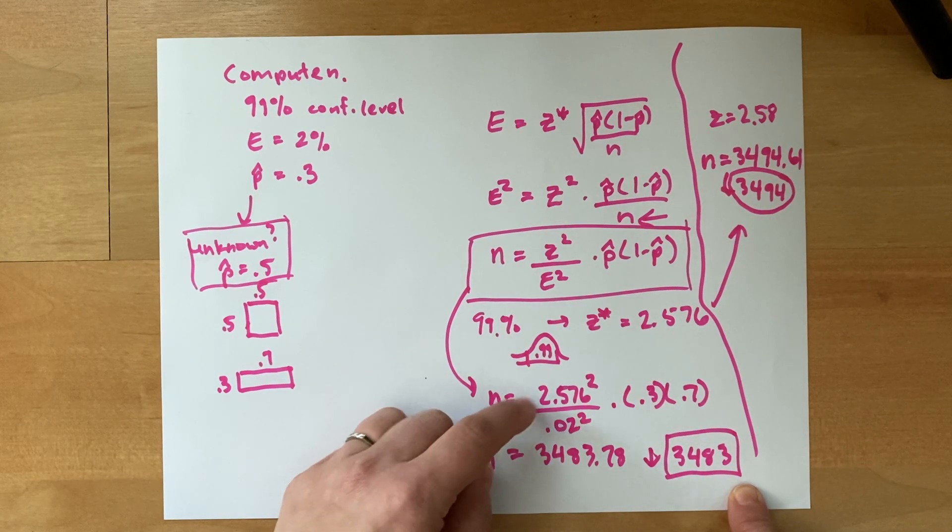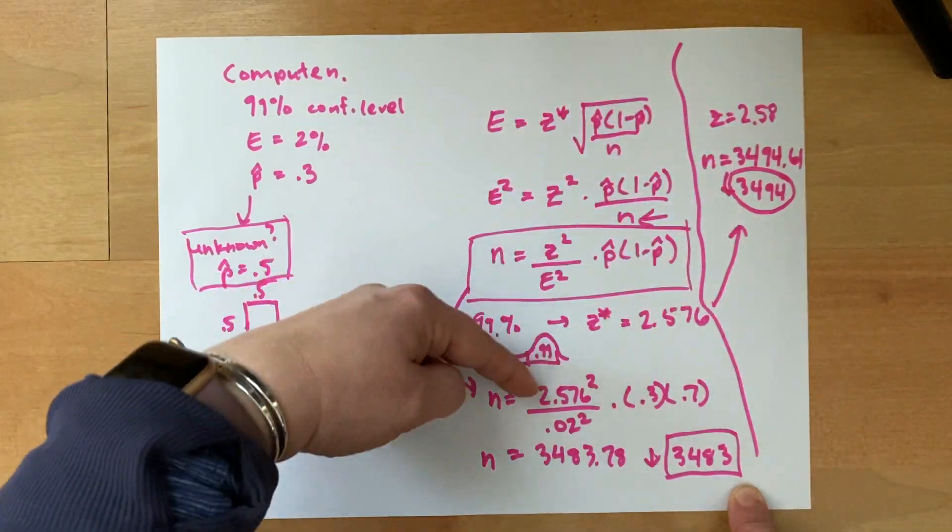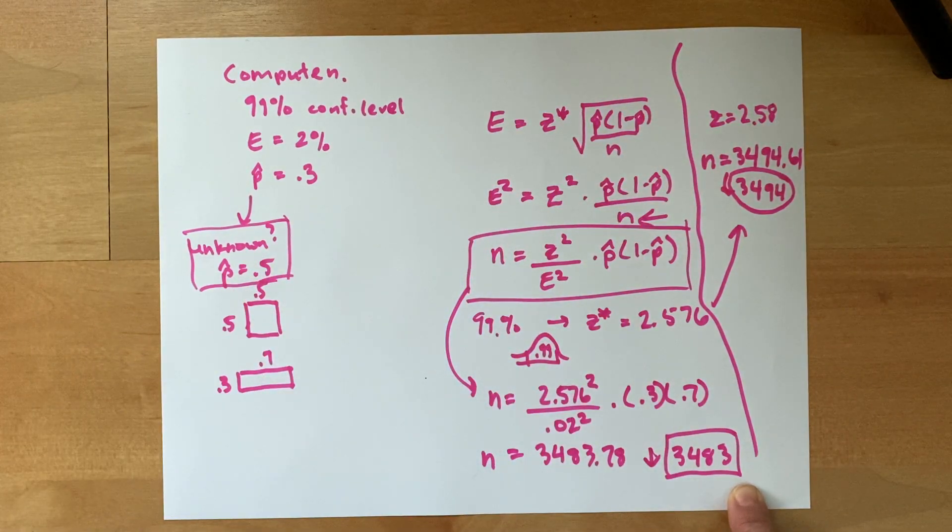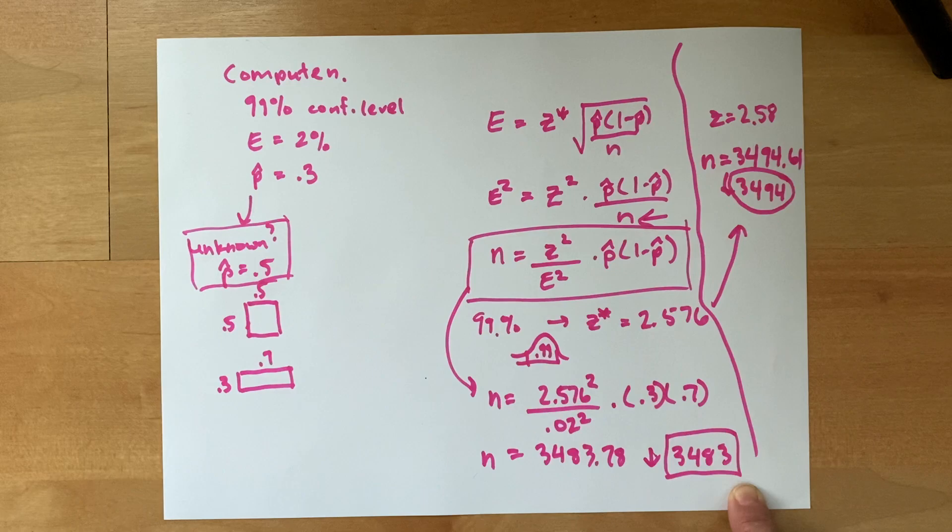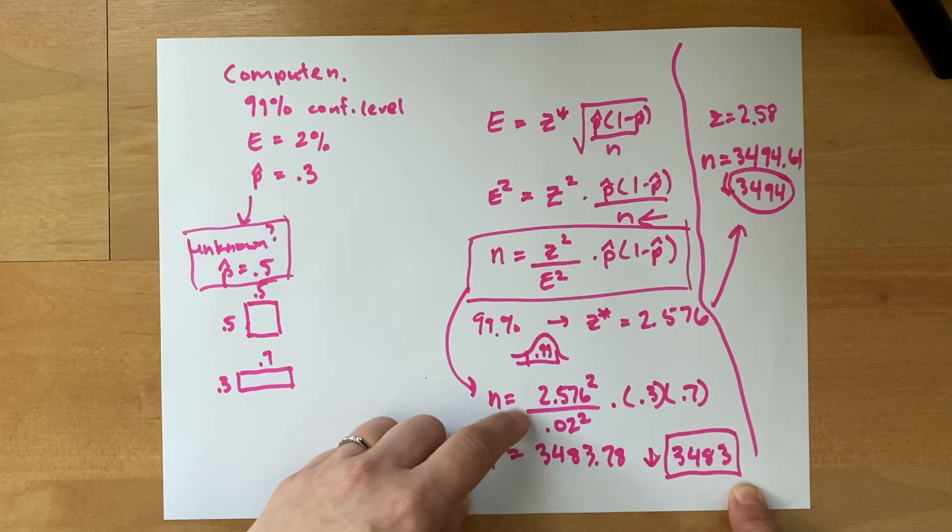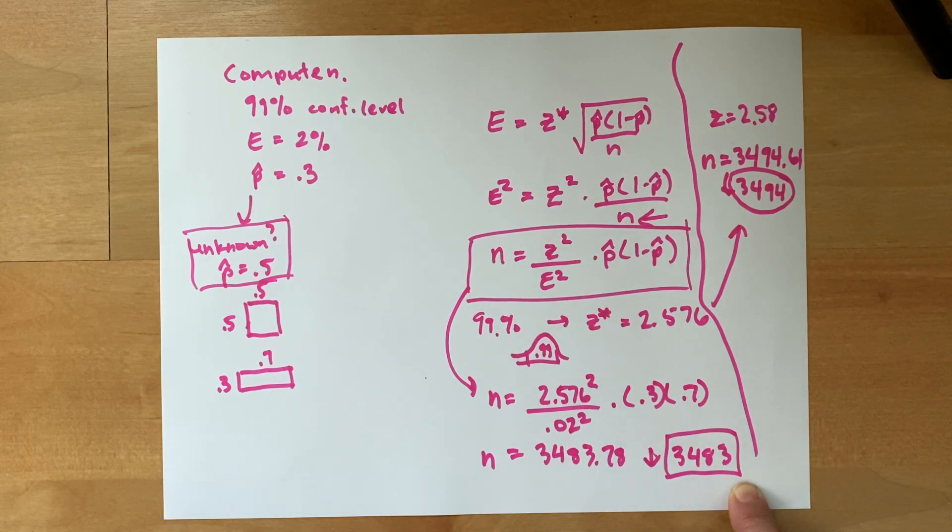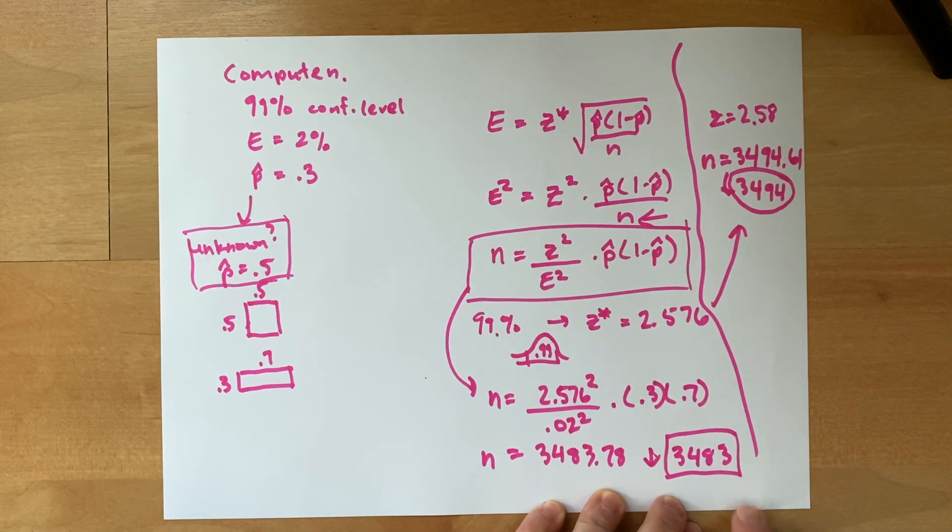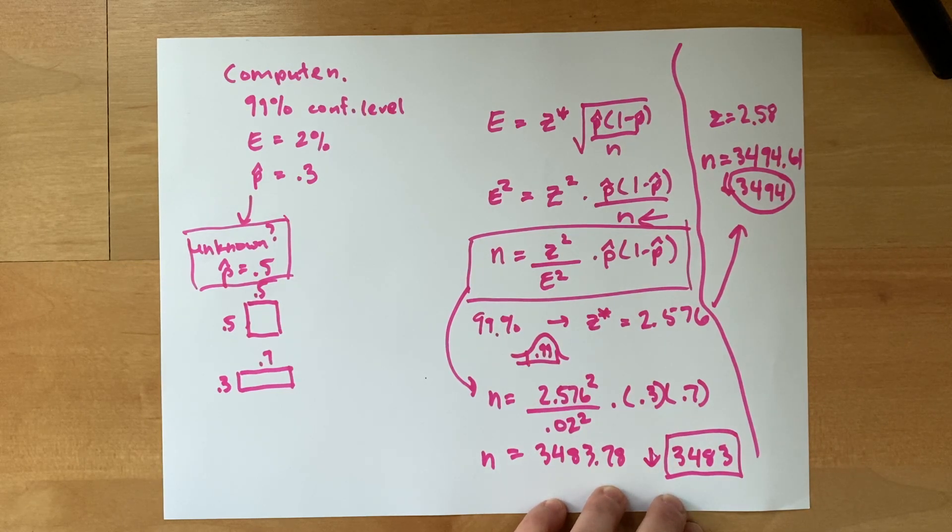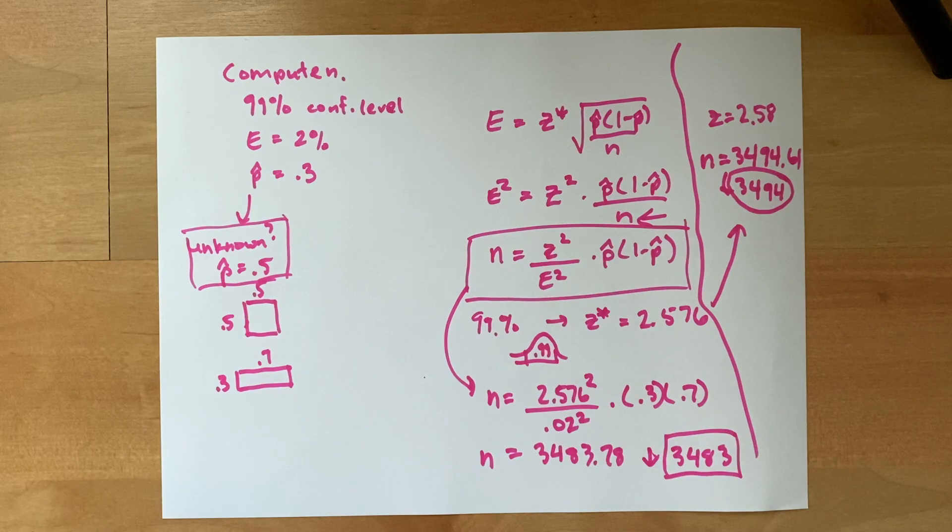So the catch is to pay attention to how many decimal places the directions say to round out your z value, or if you can round out z to a whole lot of decimal places. In other words, don't round. Then you'll get the most accurate sample size possible. And then, if all else fails, ask your teacher and see what they say. I hope this helps. Bye!